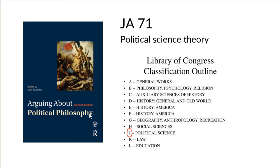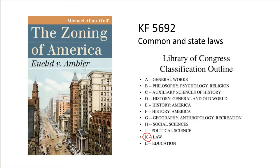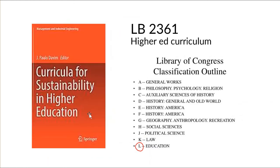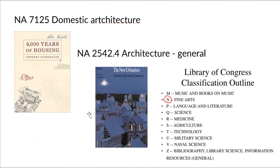For example, the decision to drive less is related to individual liberty, but it affects collective well-being. K in law is where we will find books on zoning. Zoning laws have a huge effect on sustainability — if all housing is located in one place and all businesses are zoned in another, that requires more transportation. L in education is where we find material on how sustainability is taught. N in the fine arts is where we find books on domestic architecture and neighborhood design, both very closely related to sustainable cities.